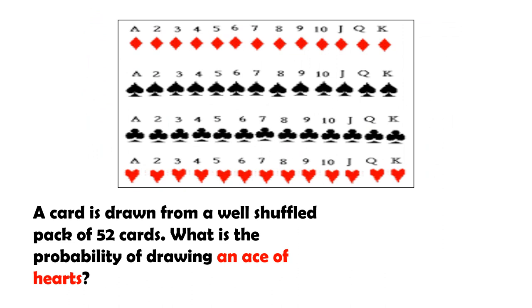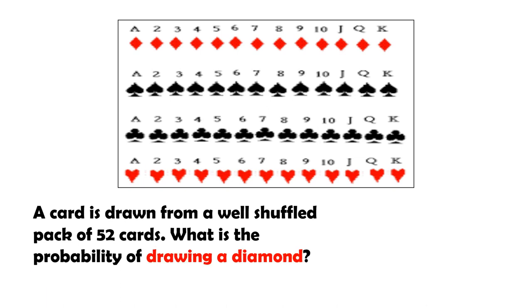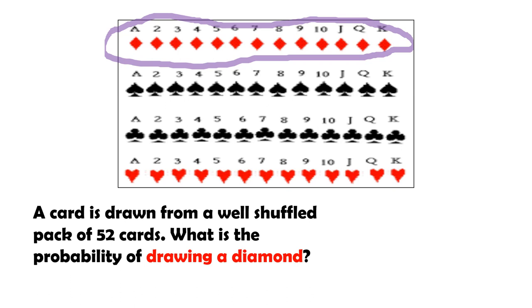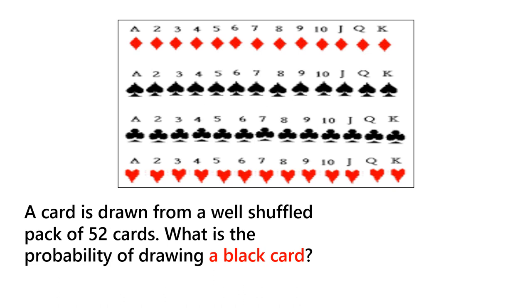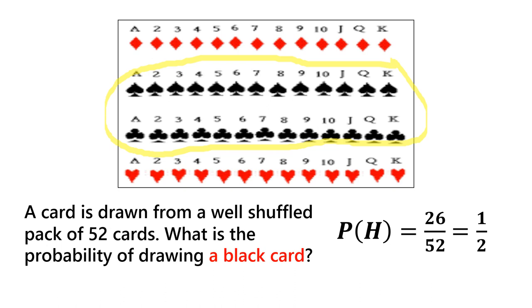A card is drawn from a well-shuffled pack of 52 cards. What is the probability of drawing an ace of hearts? There is only one ace of hearts, so the answer is 1 over 52. What is the probability of drawing a diamond? From ace to king there are 13 diamonds, so it's 13 over 52 or 1 fourth. What is the probability of drawing a black card? There are 26 black cards, giving 26 over 52 or 1 half.